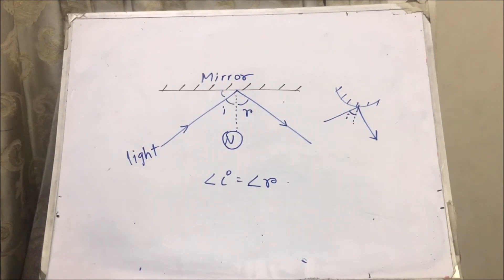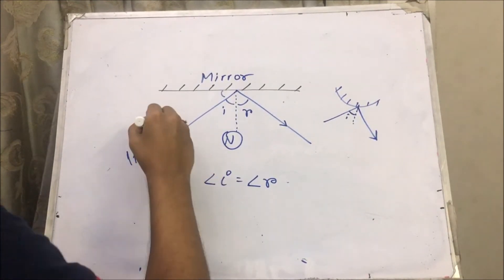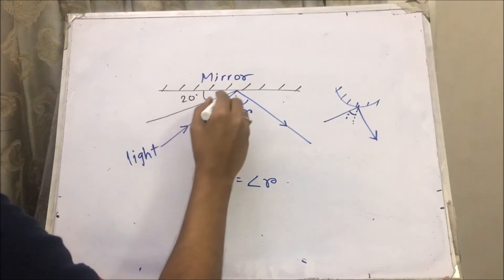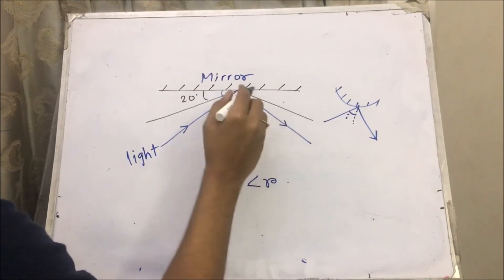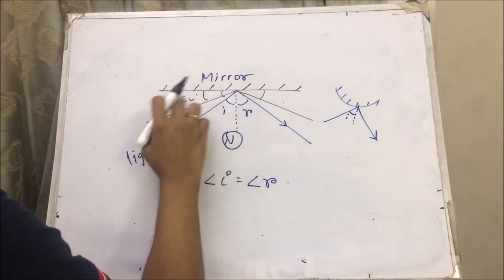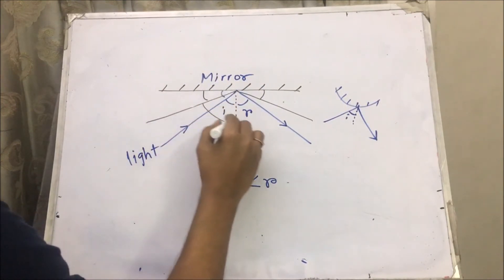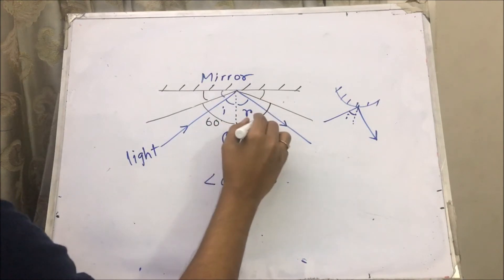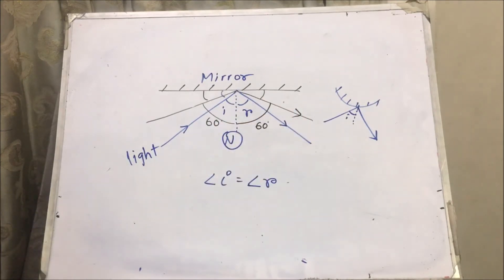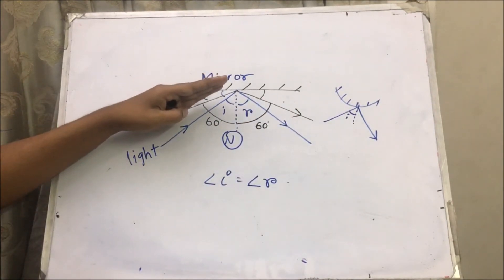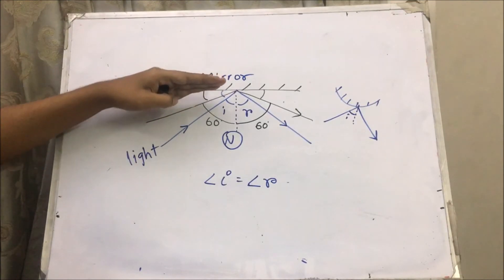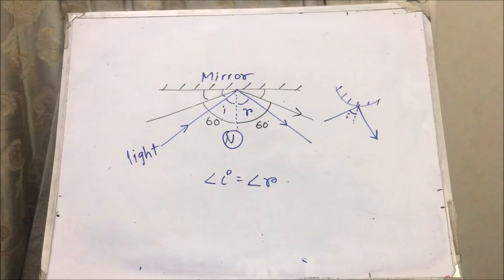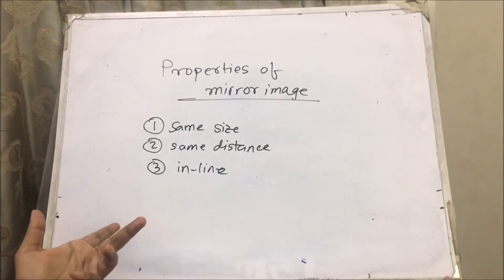For example, if I shine another light like this — imagine this to be 60 degrees — the angle of reflection will also be 60 degrees. And if you give it at a higher angle like 70 degrees, the angle of reflection will also be 70 degrees.